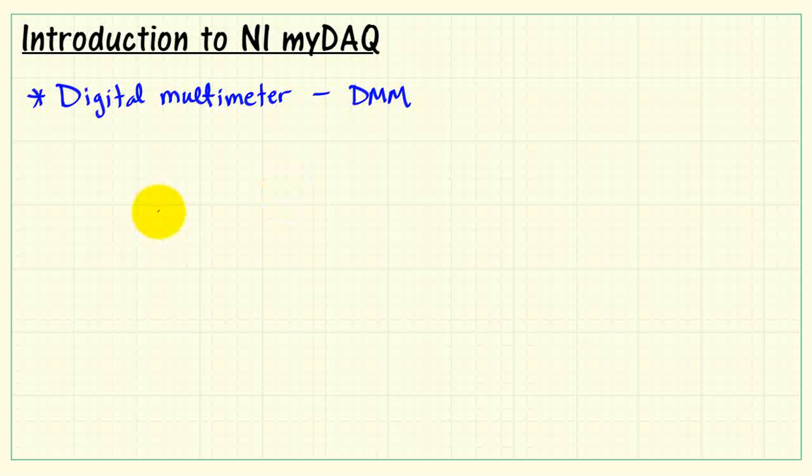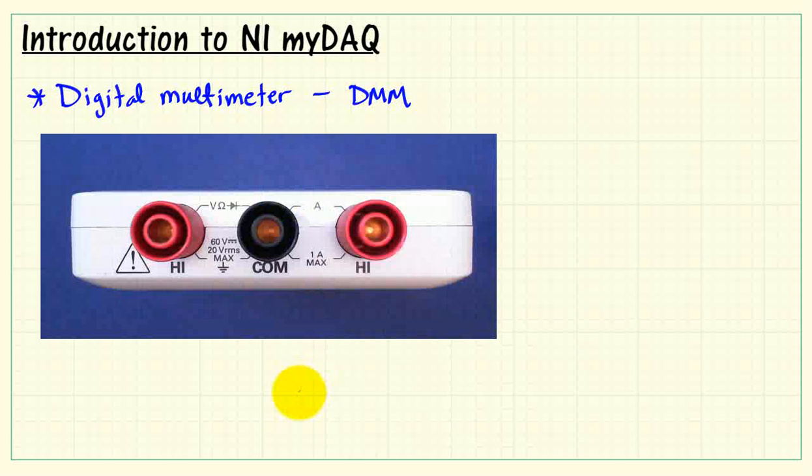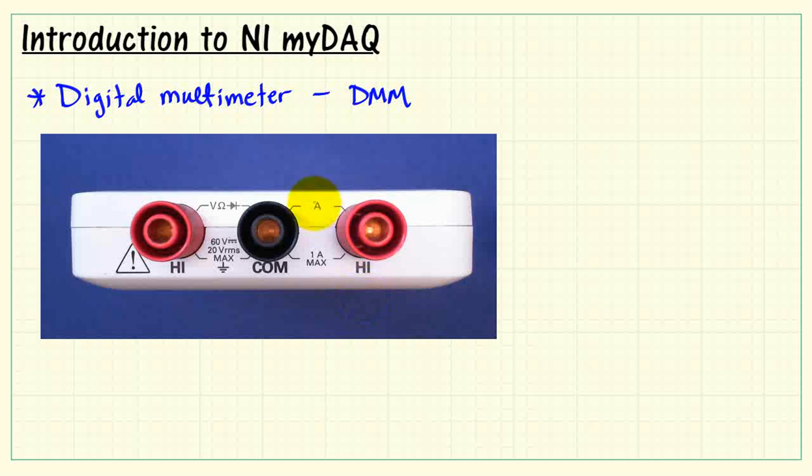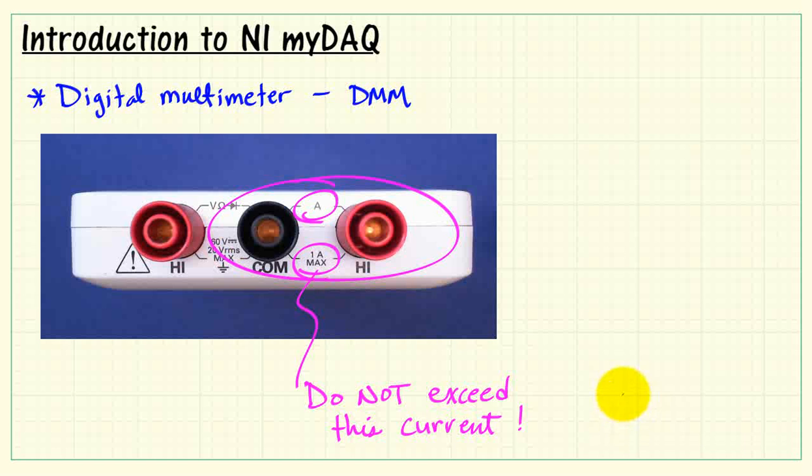Let's look at the specific characteristics of the multimeter. This is looking at the bottom face of MIDAC. These two terminals are associated with the voltmeter and ohmmeter specifically. Always pay attention to the markings on MIDAC that tell you things like maximum values. Never connect MIDAC to voltages higher than what you see here. These two terminals are associated with measuring current, and again, do not subject MIDAC to more than one amp of current.